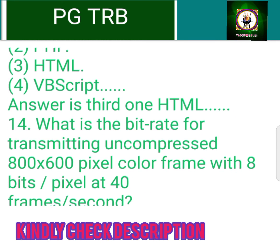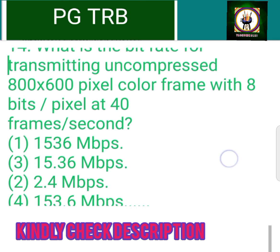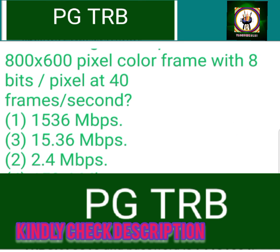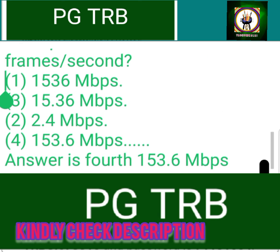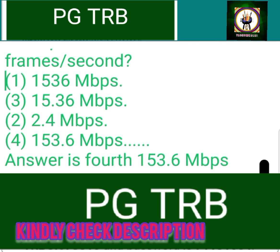What is the bitrate for transmitting uncompressed 800x600 pixel color frames with 8 bits per pixel at 40 frames per second? 1. 1536 MBps, 2. 4 MBits per second, 3. 15.36 MBits per second, 4. 153.6 MBits per second. Answer is 4th: 153.6 MBits per second.